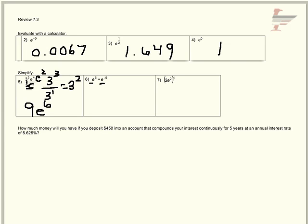This one, same base and you're multiplying, so that means you add the exponents. So 6 plus negative 9 is negative 3, and then you can't have negative exponents, so you flip that to 1 over e to the 3rd.